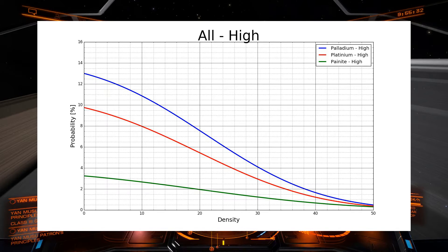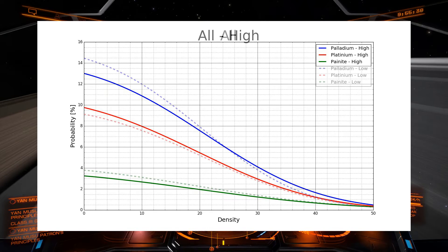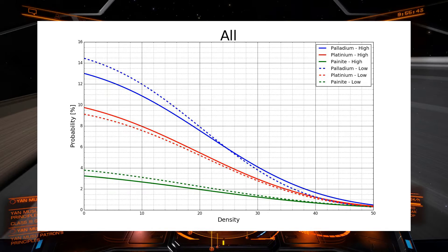Now, if we add the same graphs but for the low density areas, we can see that the values don't really change that much. I mean, there are some small deviations. There's a fairly large deviation on platinum. It seems to be that you are more likely to find platinum in low density areas. But again,